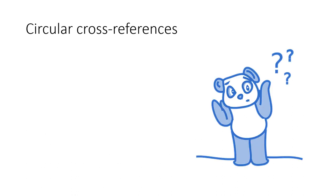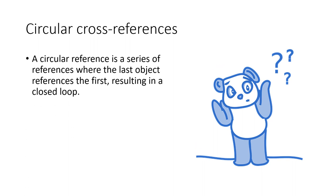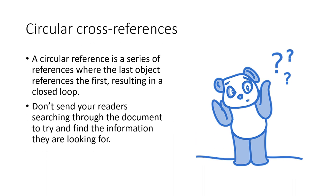We try to avoid circular cross-references. Circular cross-references are a series of references where the last object references the first, resulting in a closed loop. For example, if our report says 'see page 10,' and page 10 says 'see page 12,' and that sends us to page 14, and page 14 sends us back to where we started — we don't do that. Try not to create circular cross-references. You don't want to send your readers on a wild goose chase and drive them crazy.